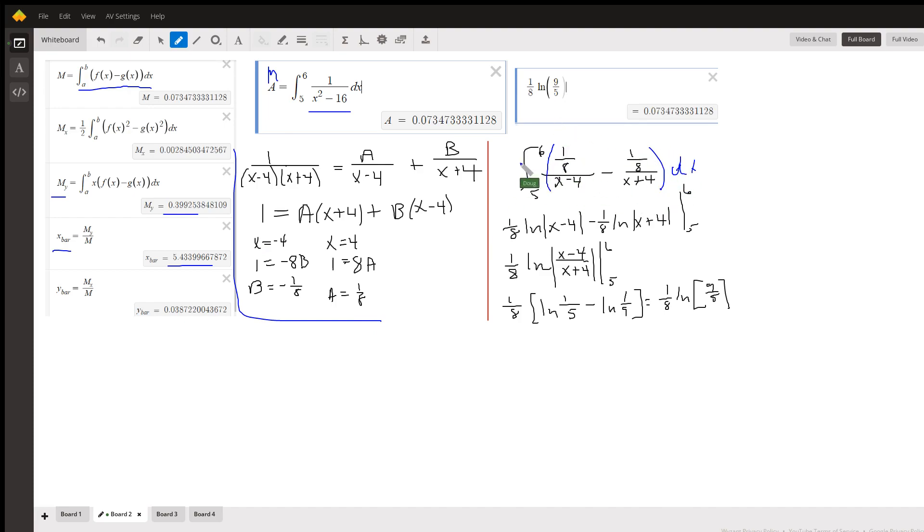So this is what we want to evaluate right here. For this term right here it's 1/8 times ln of the absolute value of x minus 4, minus 1/8 times ln of x plus 4, the whole thing evaluated from 5 to 6.